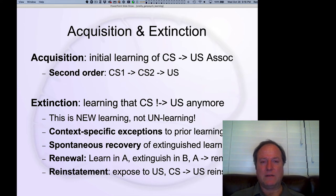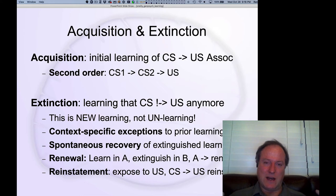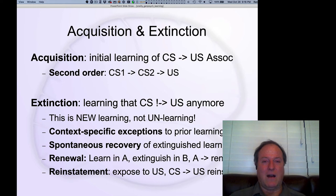There are three different phenomena with different names that are very attractive targets for quiz questions, so you'll see these on quizzes. Spontaneous recovery refers to a process where the extinguished association just automatically, by itself, recovers or reemerges on its own — there's no manipulation that people do; it just happens.